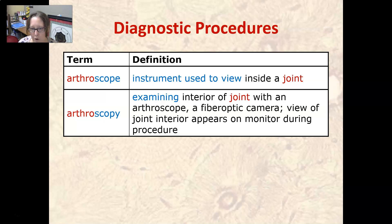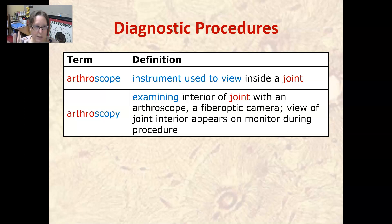Arthroscopy is examining the interior of a joint with an arthroscope — a fiber optic camera — and the view of the joint interior appears on a monitor during the procedure. Just like 'gram' and 'graphy,' we have 'scope' and 'scopy.' A scope is the instrument used to view — think microscope — and scopy is the process of using the scope, like microscopy or arthroscopy.